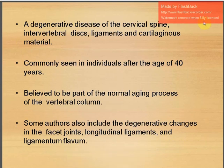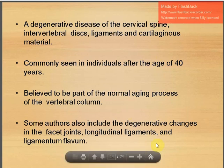Degeneration takes place in the intervertebral discs and in the ligaments, which become hypertrophied and cartilaginous. It is believed to be part of the normal aging process of the vertebral column. Some authors also include degenerative changes in the facet joints, seen as facet joint arthropathy, and the longitudinal ligaments and ligamentum flavum also become thick and hypertrophied.